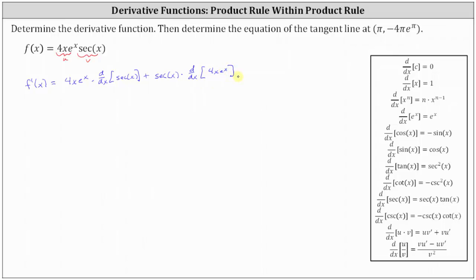Notice how to find this derivative, we will have to apply the product rule again. So for the next step, we have f prime of x equals four x e to the x times the derivative of secant x, which is equal to secant x tangent x.